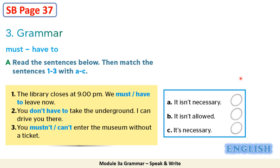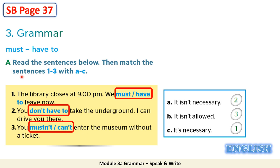Read the sentences again and try to work it out. Let's check your answers now. Sentence number 2 means it isn't necessary to do something — you don't have to. Sentence number 3 means it isn't allowed to do something — you mustn't/can't. Sentence number 1 means it's necessary to do something — we must/have to.